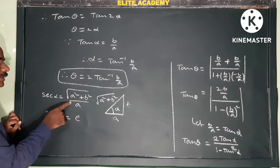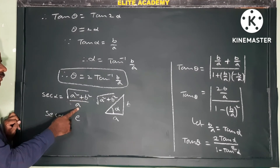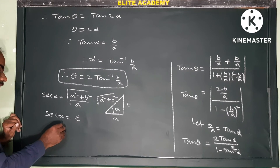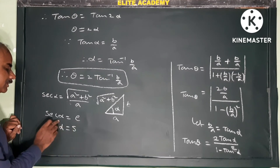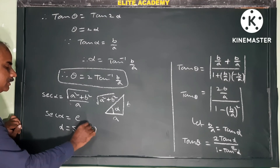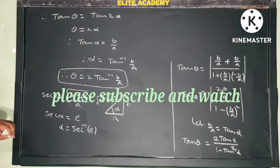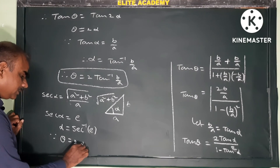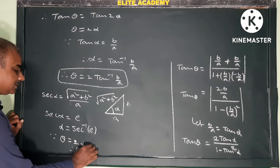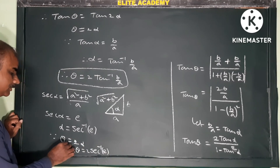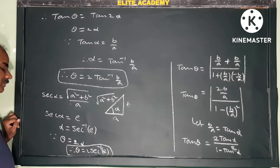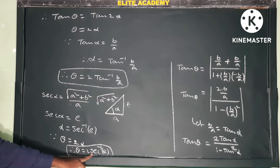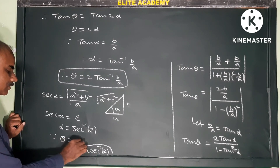The eccentricity formula for a hyperbola is e = √(a² + b²) / a. So sec α = e, which means α = sec⁻¹(e). Since θ = 2α, therefore θ = 2sec⁻¹(e). This is another form of the angle between the asymptotes. So θ = 2tan⁻¹(b/a) or θ = 2sec⁻¹(e) — this is the formula to find the angle between the asymptotes of the hyperbola.